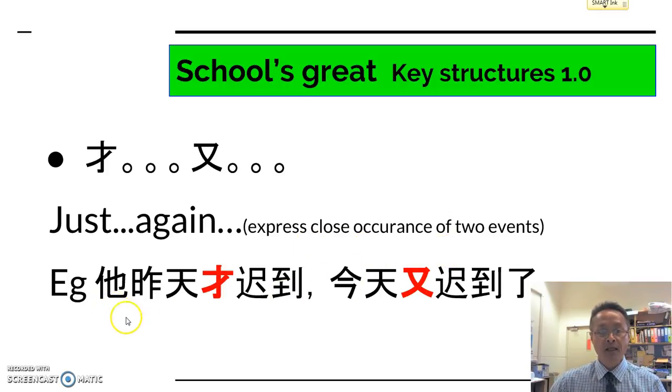For example, 她昨天才迟到, 今天又迟到了. So the two actions have to be similar or the same, and the difference is the time phrase here. 她昨天, yesterday, he 才迟到 was again or just late. 今天又迟到了, today he was late again.